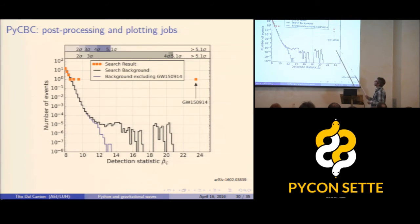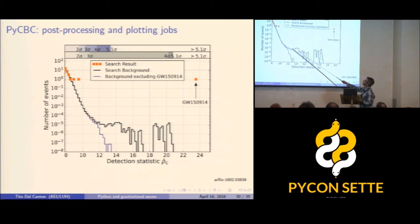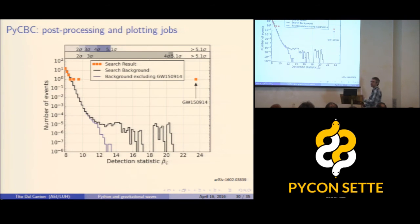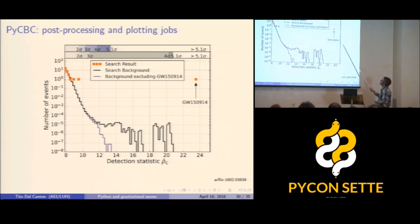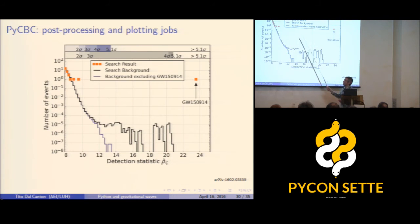The most important final results plot shows the combined SNR from both detectors against the number of events. The background distribution comes from time-shifted noise triggers; the orange squares are foreground potential signals. When we analyzed this data, we found one event louder than everything in the background, with statistical significance greater than 5.1 sigma — so we gave it a name, and this was the detection. A second event is also quite far from the background distribution and is interesting, but its statistical significance is not high enough to claim a true detection.